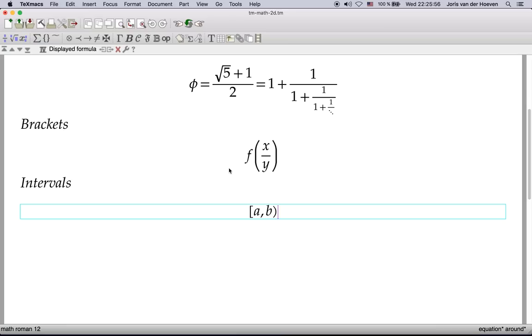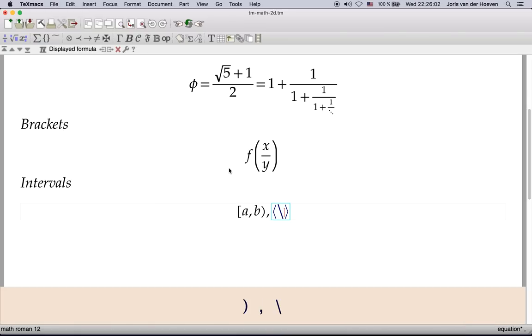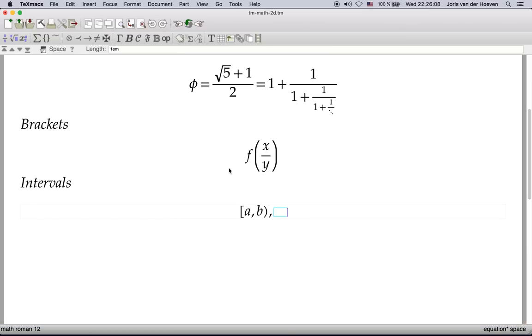When the cursor is behind the closing bracket, then you may also remove it altogether. In France a different notation is used for intervals. The four types of intervals are then obtained through the variant mechanism.